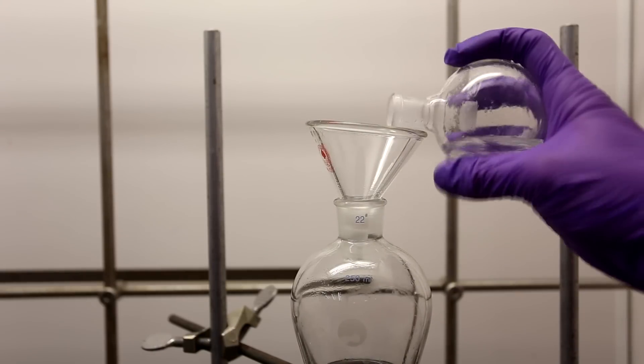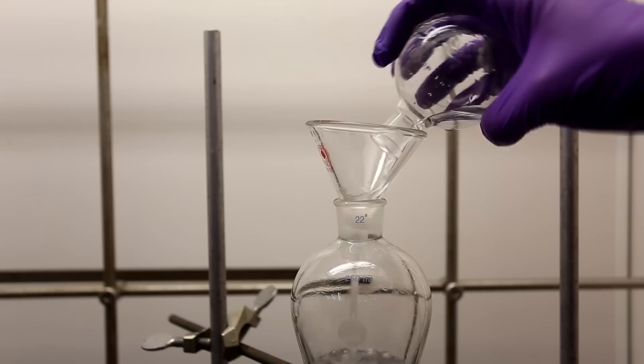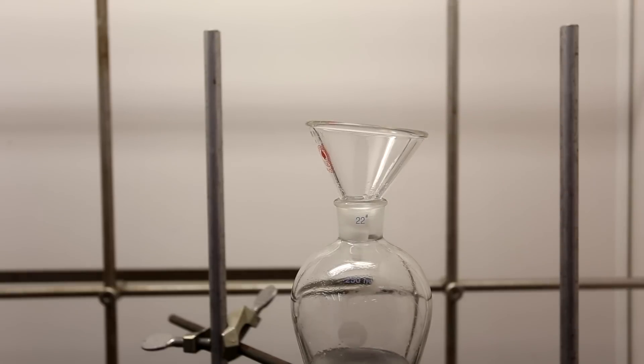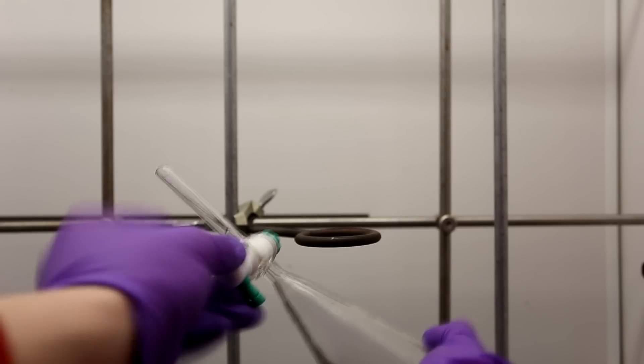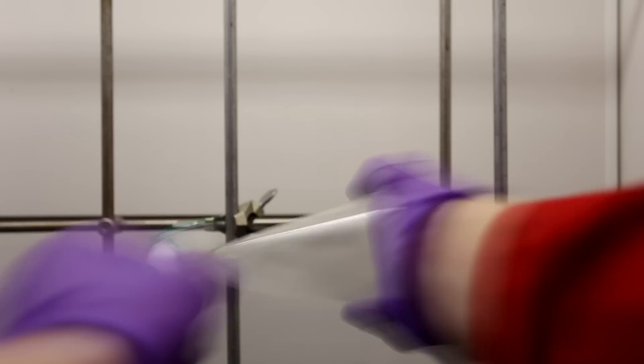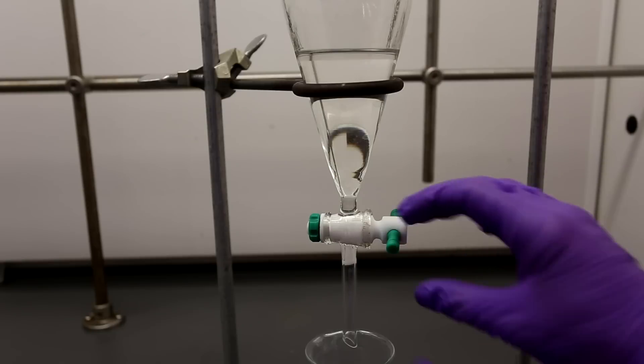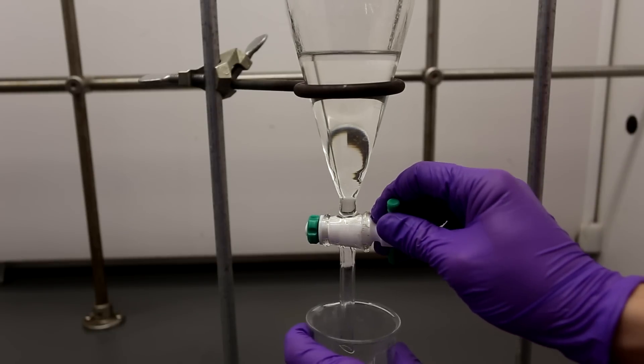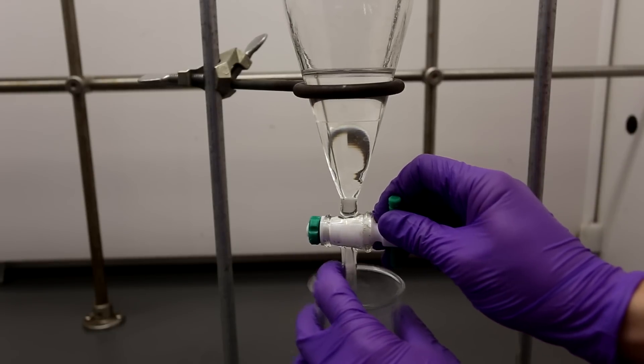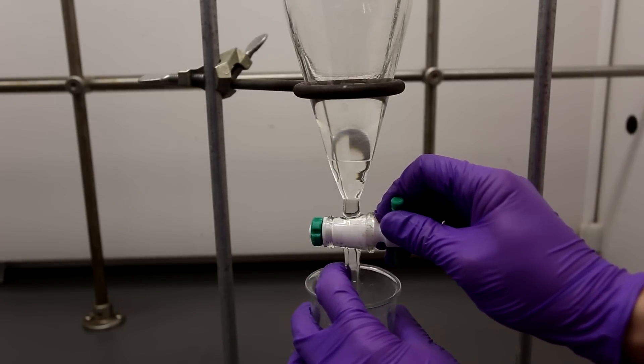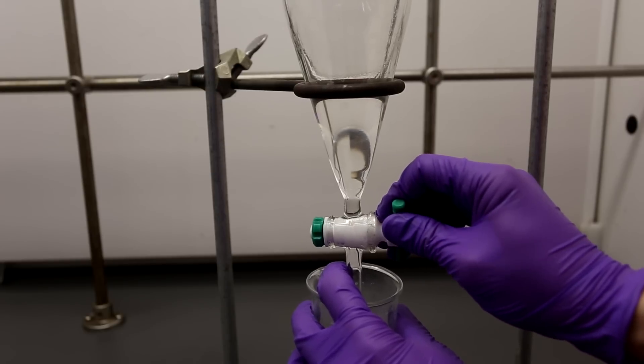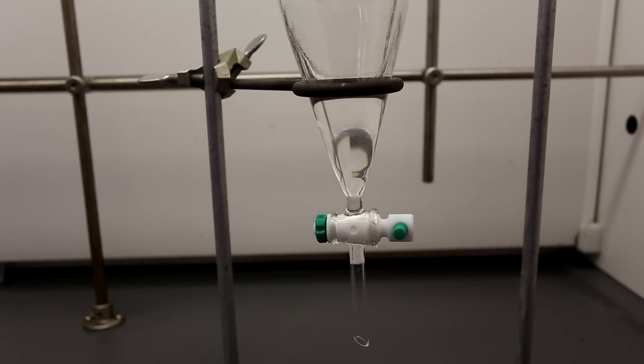The round bottom flask was washed with about 15 milliliters of water, which was added to the separatory funnel. The separatory funnel is then capped and shaken vigorously with frequent venting. The layers are allowed to separate and the bottom aqueous layer is discarded and the upper pentyl acetate layer is retained. This step washes away a lot of the acetic acid and sulfuric acid.